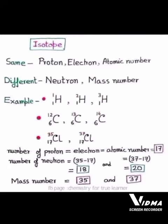In chlorine-35, the number of neutrons equals 18, while in chlorine-37, the number of neutrons is 20. Similarly, the mass number of chlorine-35 is 35 and chlorine-37 is 37.